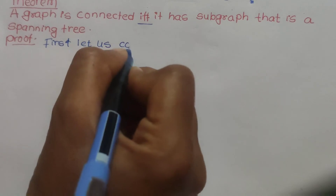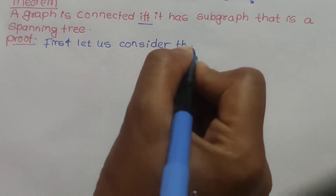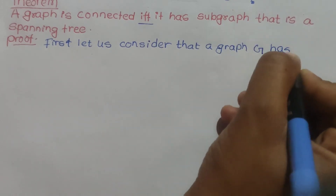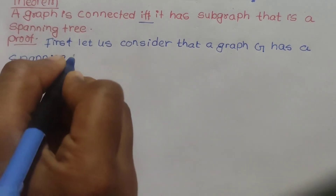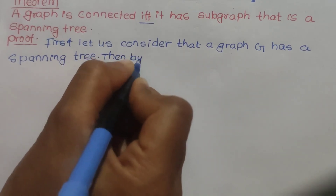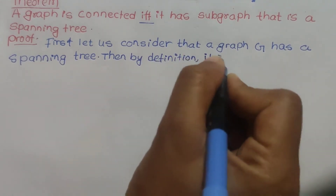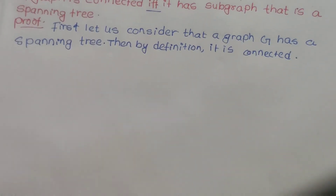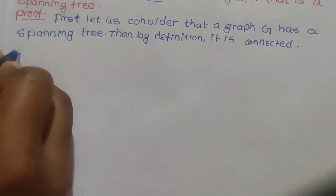Let us consider that a graph G has a spanning tree. Then by the definition of spanning tree, it is connected. So conversely, let us suppose our graph is connected.